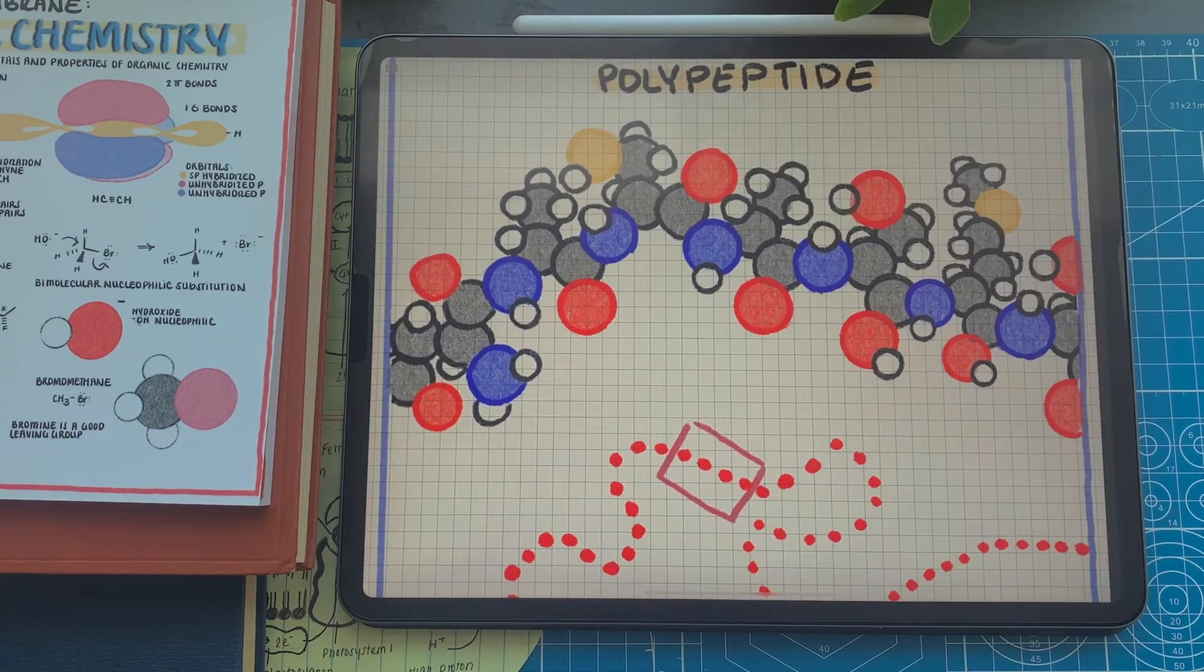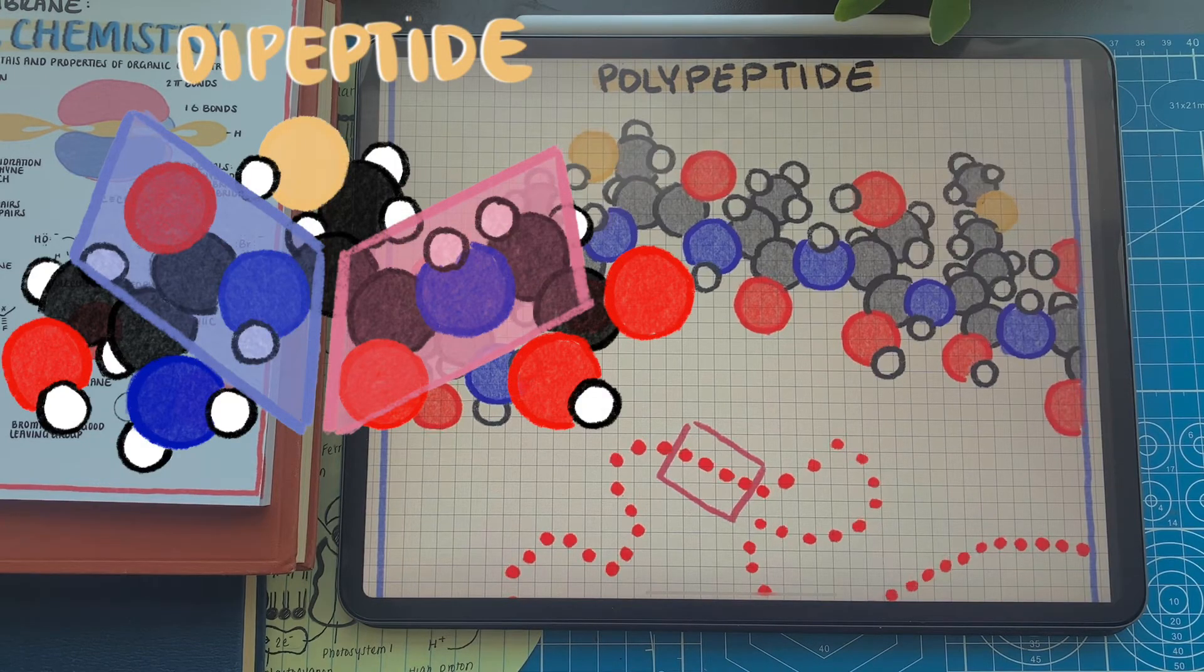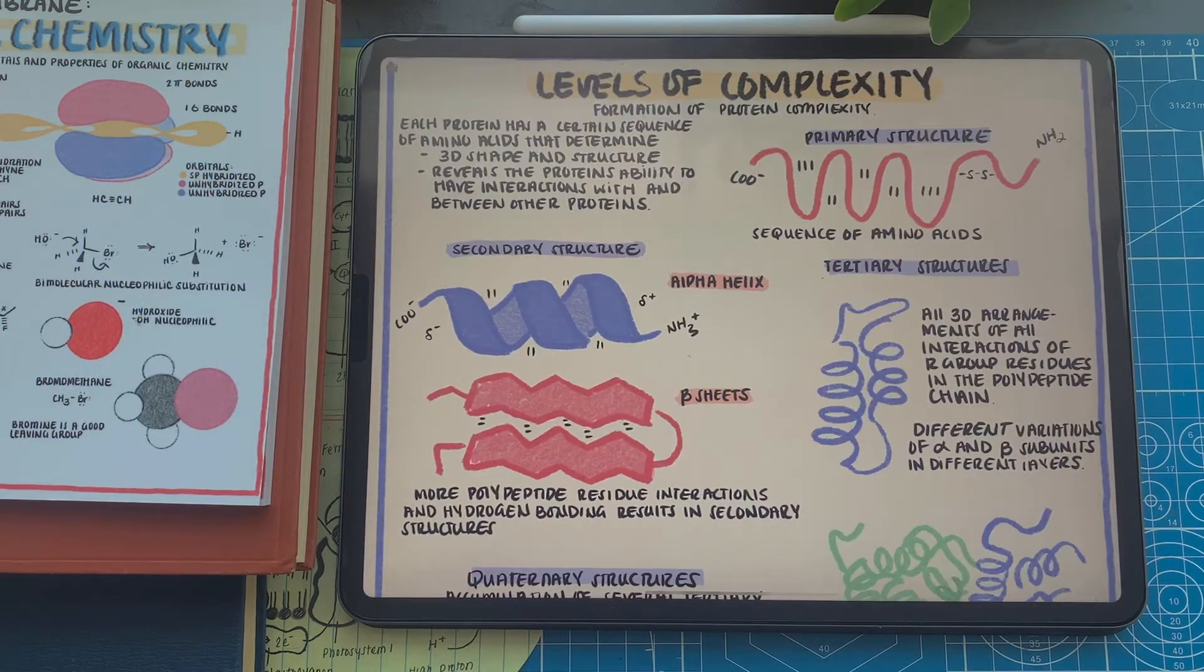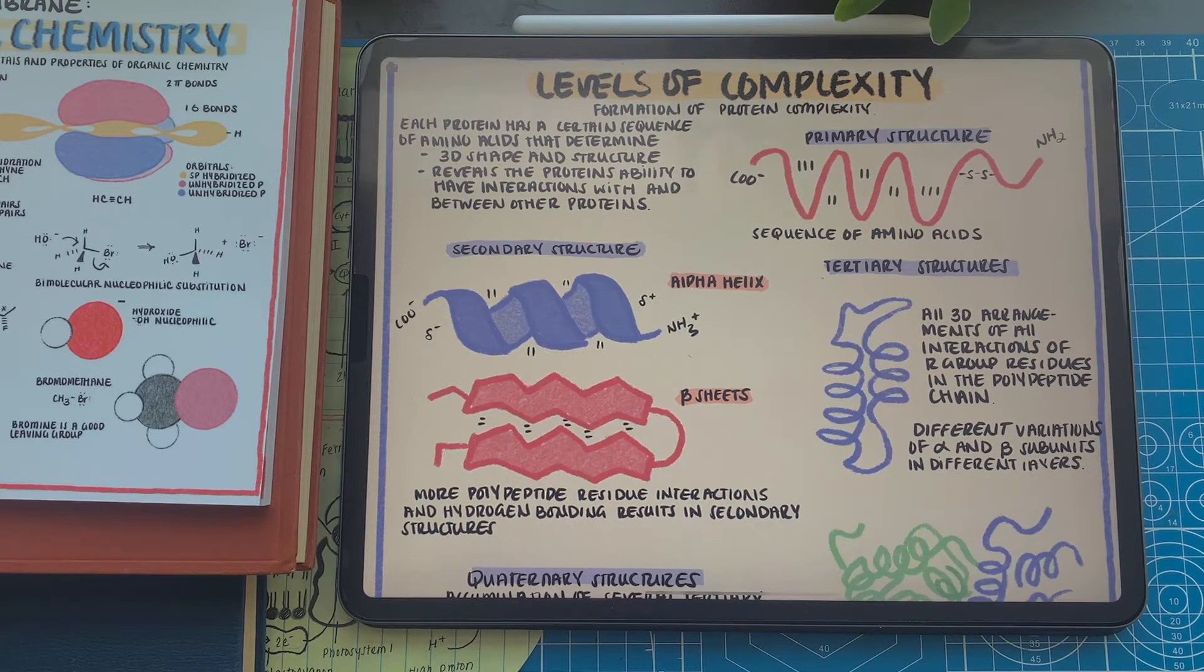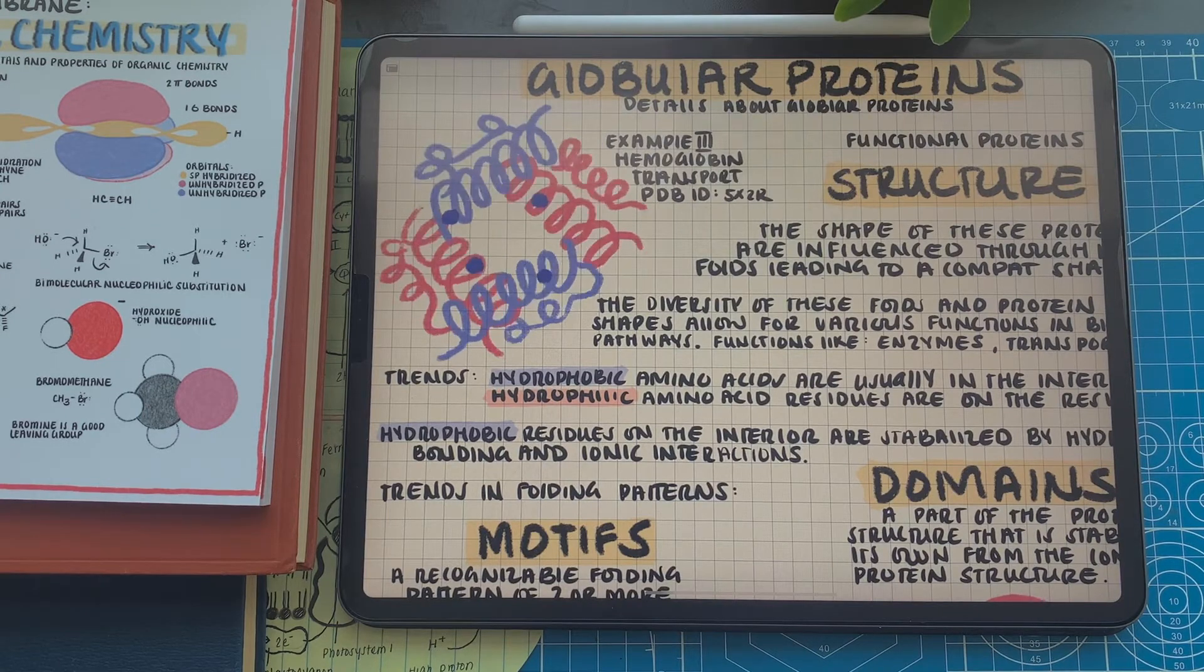Proteins are also amphipathic, yet they are built from the ranging amino acid residues linked together through peptide bonds, creating a polypeptide polymer. The specific sequence of the 20 different natural amino acids gives the protein its specific function and properties through ranging folding patterns and internal interactions.